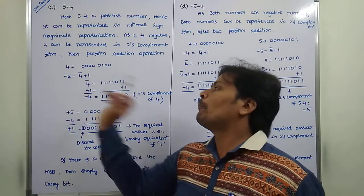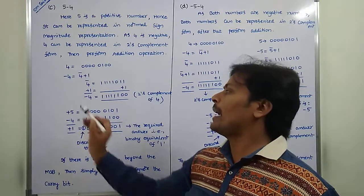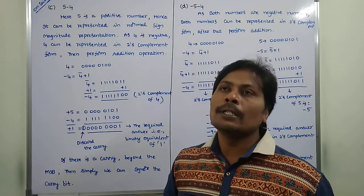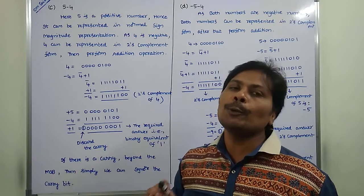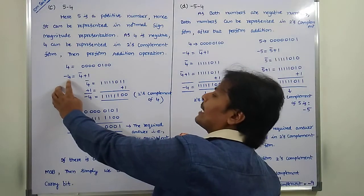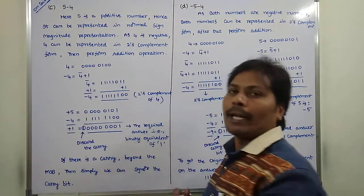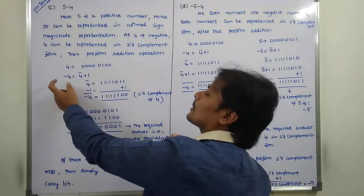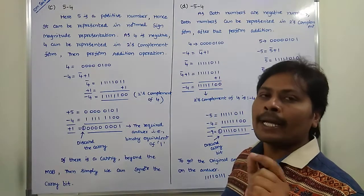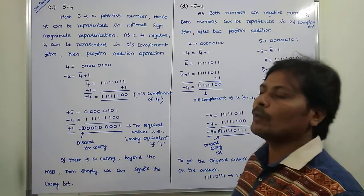Now minus 4. Minus 4 can be represented in two's complement form. Two's complement is equal to one's complement plus 1. So to represent minus 4, it is 4 complement plus 1. This is the two's complement of 4, which equals minus 4. Minus 4 can be written as 4 complement plus 1.